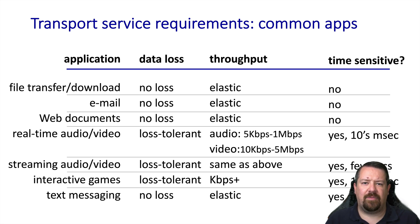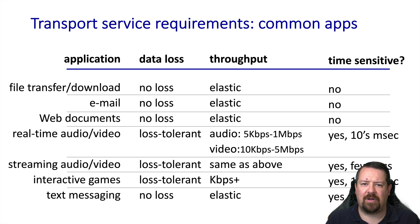Real-time audio and video do have minimum bandwidth requirements in order to deliver a usable service. Likewise, they have a latency requirement beyond which users will notice a delay between the other person speaking and being heard. Streaming audio and video, on the other hand, was recorded in the past so it doesn't have this tight latency requirement, but may have a similar minimum throughput requirement. Applications like email and text messaging have a time constraint that is not nearly as tight — a message arriving 30 seconds late is generally unnoticeable, but one arriving hours or days later would be unsatisfactory.